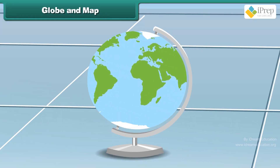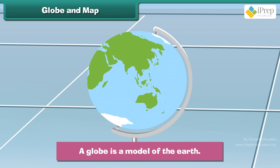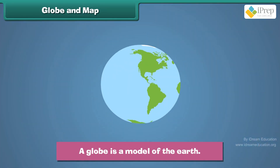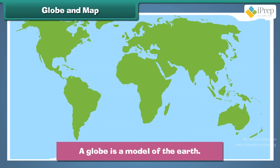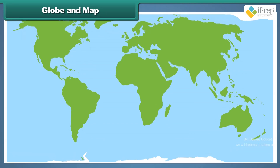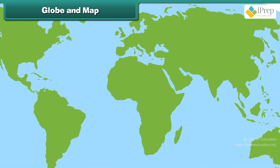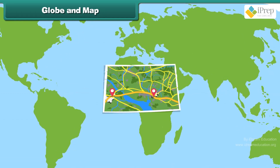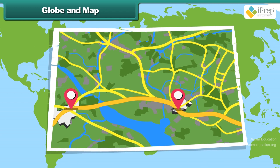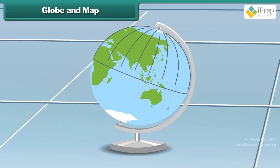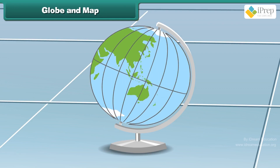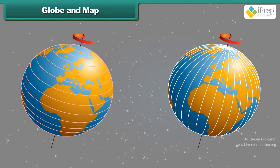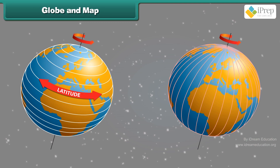A globe is a model of the Earth. A globe is more accurate than a flat map because it mimics the true shape of the Earth and is able to accurately portray continent shapes and distances between land masses. All the lines on maps and globes are imaginary lines drawn by humans. The horizontal lines are known as latitudes while the vertical lines are known as longitudes.